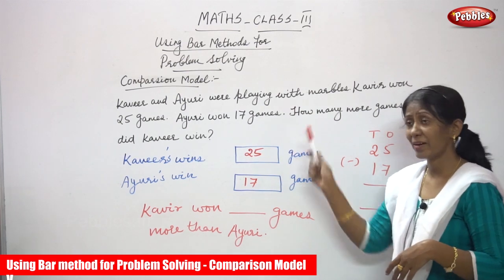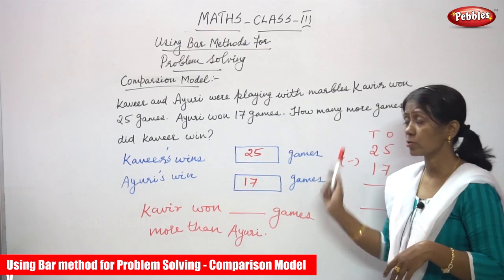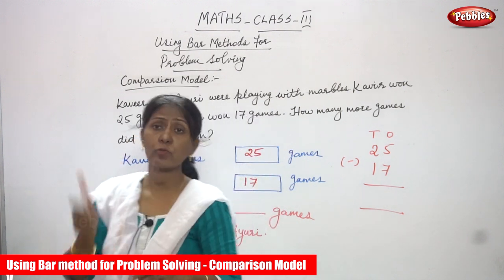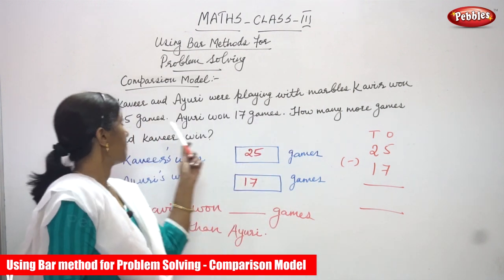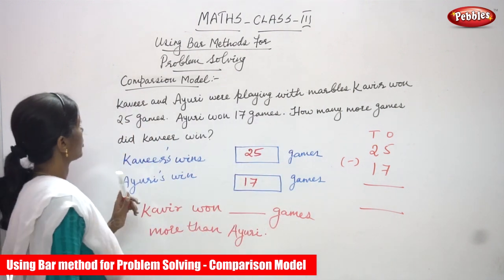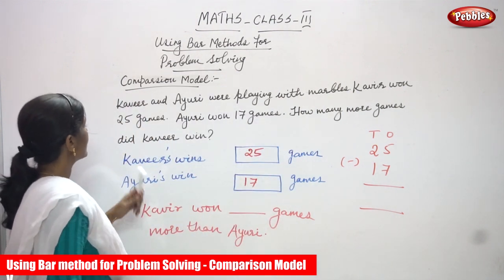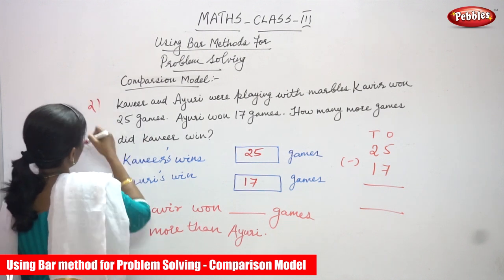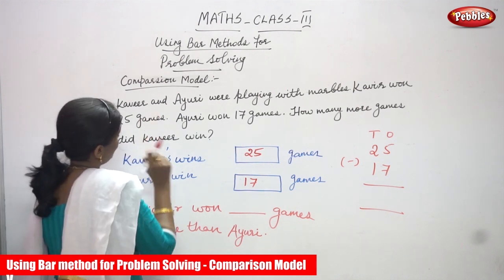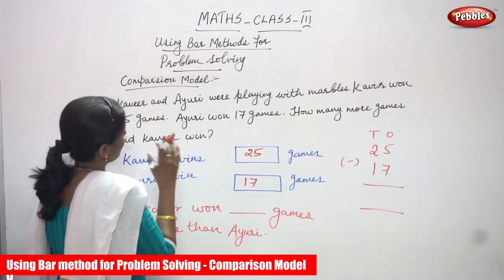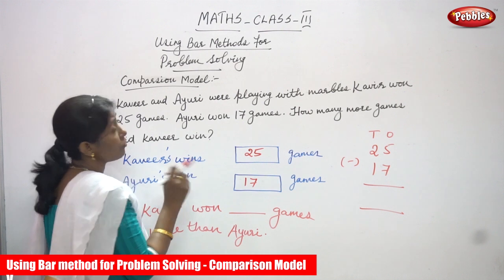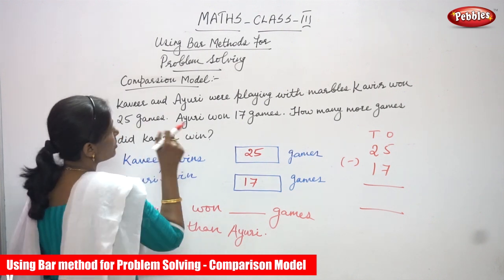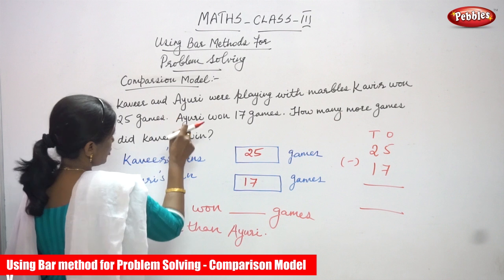This is a comparison model and also a subtraction model. For this model we are using the bar method. This is the second question in the subtraction model, but it is a comparison model — and for this model also we are using the bar method.